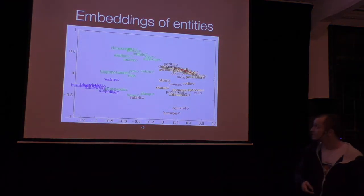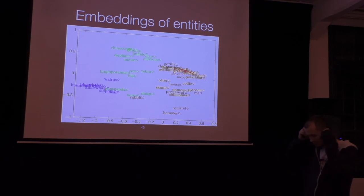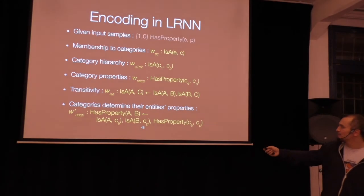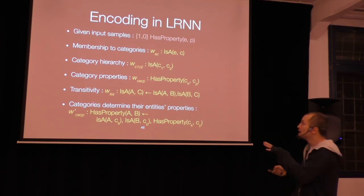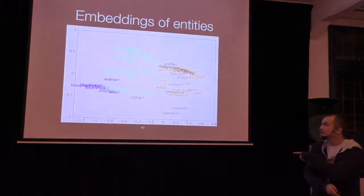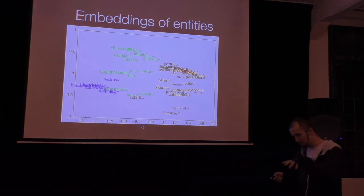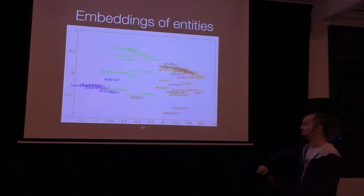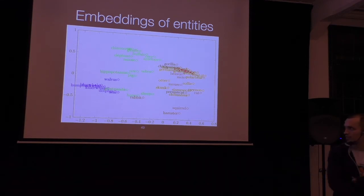The funny thing is that if you train this on data, you can interpret the weights assigning entities into categories as endowing an embedding space for the original entities. If you do a PCA projection, you can interpret these weights as embeddings for entities within the latent space of the categories you're learning. It somewhat clusters carnivores and herbivores together, and so on.